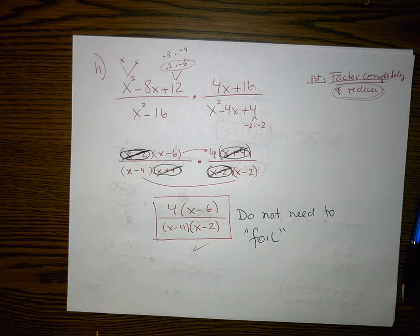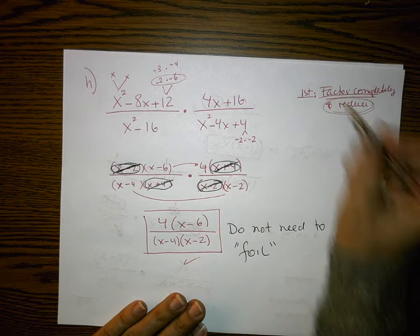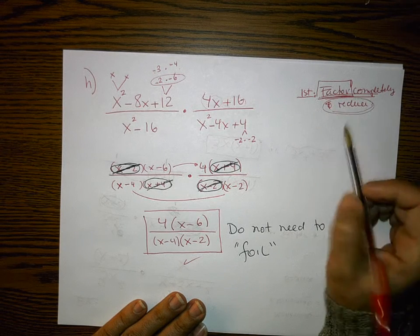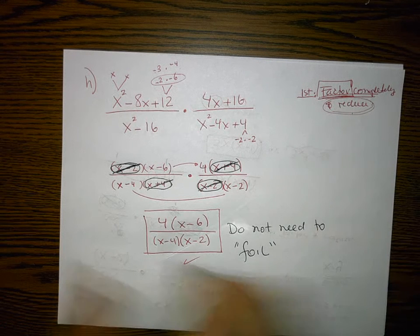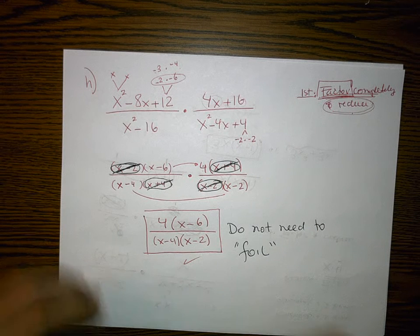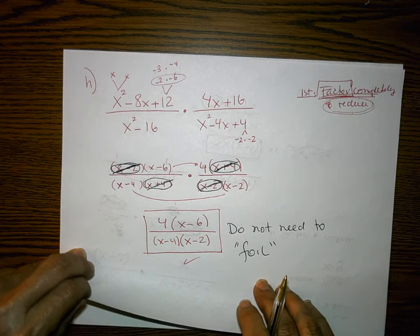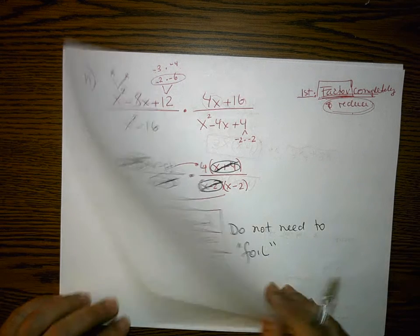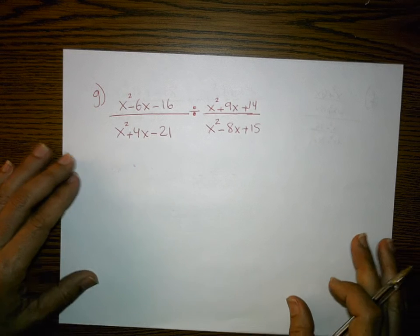As you can see, the steps are the same every single time. You must be good at factoring — once you factor, reducing is easy, and then multiplying straight across is easy too. Now that we've done multiplication, let's talk about division.